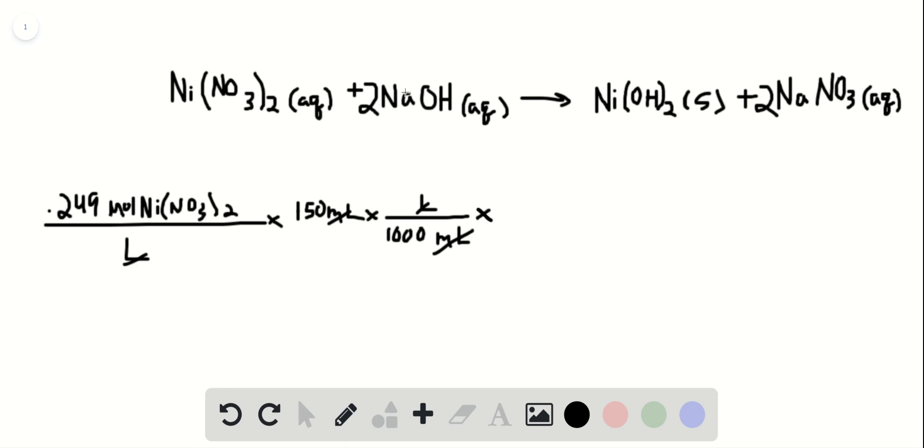And then from our balanced equation, we can see that we need 2 moles of sodium hydroxide to balance 1 mole of nickel-2 nitrate. So I'll write that balanced equation here: 1 mole of nickel-2 nitrate with 2 moles of sodium hydroxide.